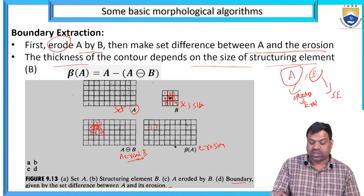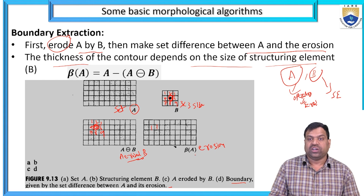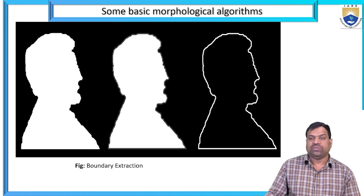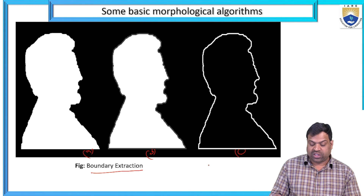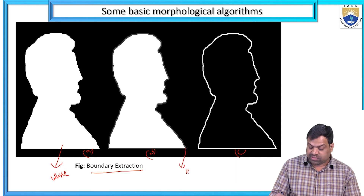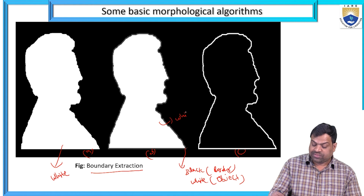Figure A is the set A, figure B is the structuring element, figure C is A eroded by B, and D is the boundary given by the difference between A and its erosion. In figure A the original image is completely white — no borders. In figure B, black borders are applied. The object is white and borders are black, so we can identify the shape — whether it is a person or an animal.